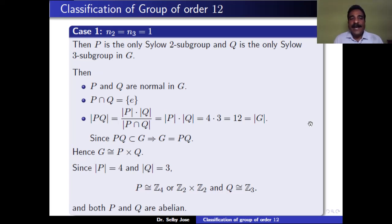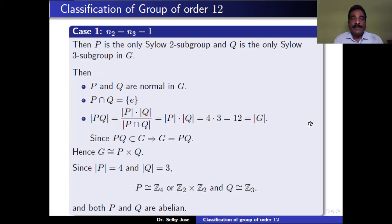Since P has 4 elements, P is a group of order 4, so P is isomorphic to Z4 or Z2 × Z2, as seen in the last lecture. Since Q has 3 elements, Q is a group of order 3, and therefore Q is isomorphic to Z3.